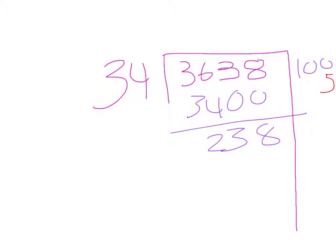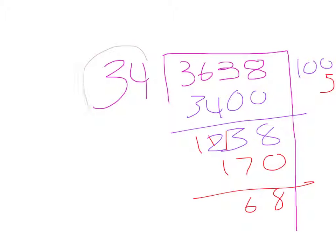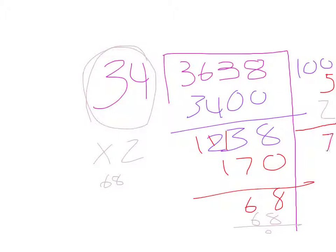I'm going to pick 5 this time. So then we have 68. I know that 34 times 2 is 68, so I can put my 2 over here, 68 down here, and we have 0 left over. So now what I have to do is I have to add up these numbers. That is 107.